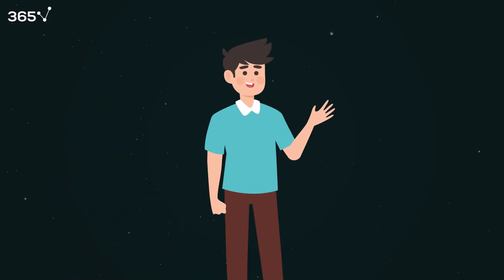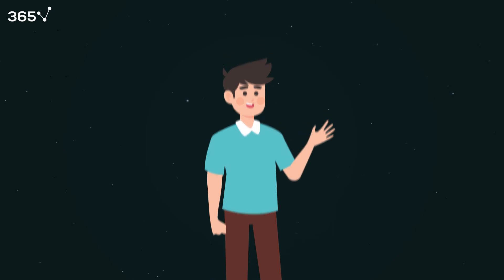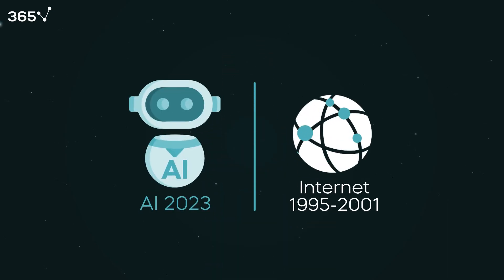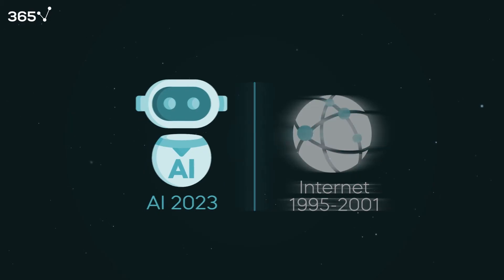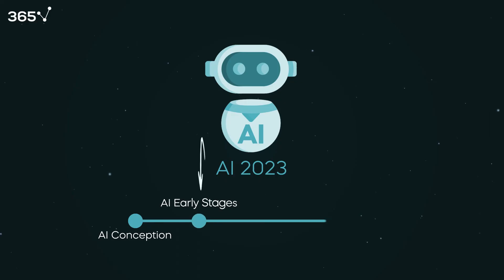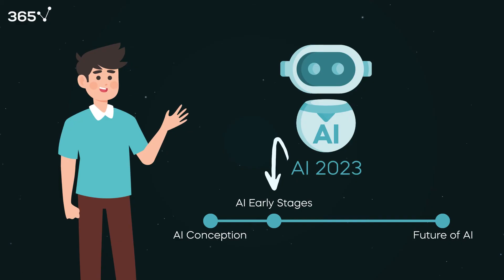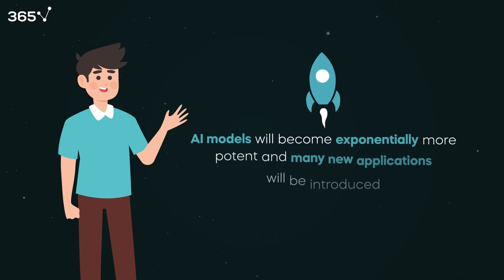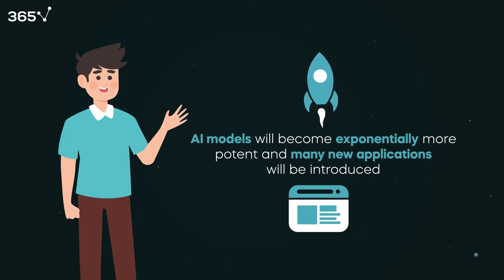Now that we've described the major types of AI technologies, let's reflect on the present and future of this exciting field. Today's AI sector can be compared to the internet of 1995 to 2001 — we're still in a very early stage of development for most AI applications. We can imagine which fields will be impacted, but we don't know exactly how. Over time, AI models will become exponentially more potent and many new applications will be introduced.